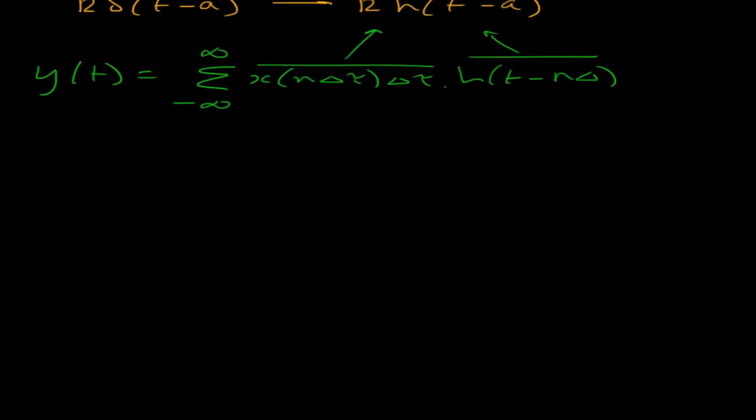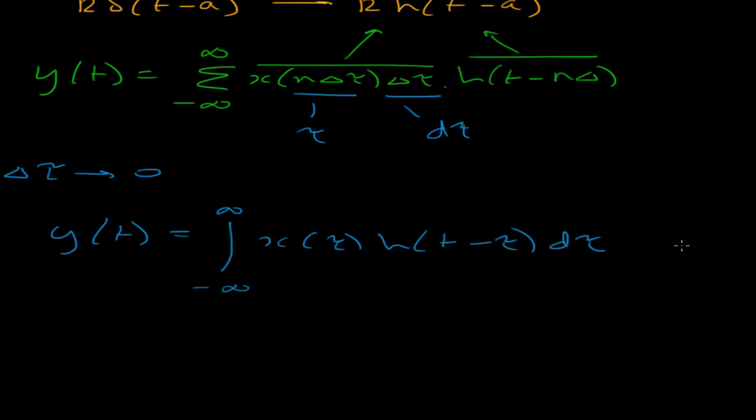Once again, I can take delta tau to 0 so that the output then becomes an integral. This delta tau becomes d tau, this n delta tau becomes tau. So I end up with x tau h t minus tau d tau. You'll recognize this as the convolution integral. That completes the video.